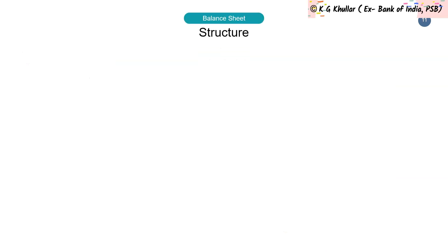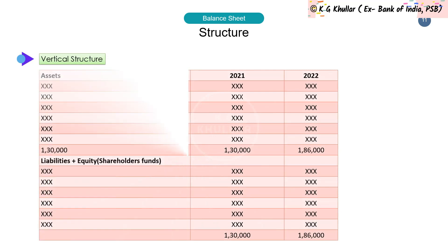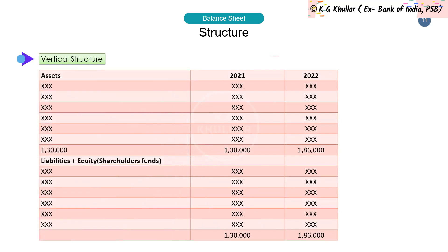In the vertical format of the balance sheet, liabilities, equity, and assets are shown one below the other — that's why it's called the vertical format. Here also, both assets and liabilities plus equity must tally.